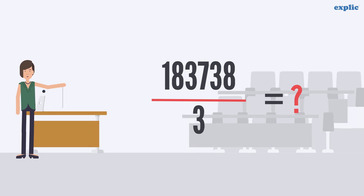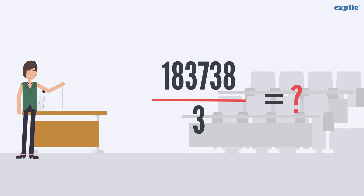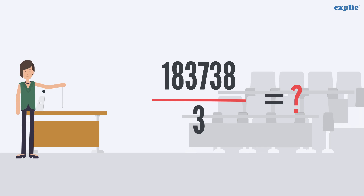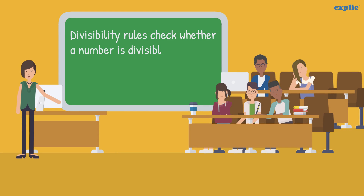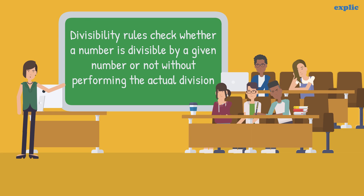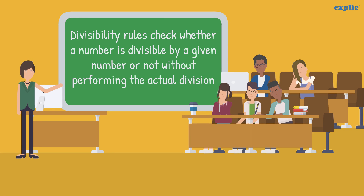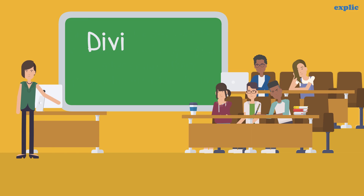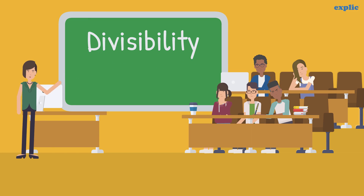Can you tell if 183738 is divisible by 3 or not, without performing actual division? It's difficult, right? That's why we use the divisibility rules to check whether a number is divisible by a given number or not, without performing the actual division. Let's learn some important divisibility rules.